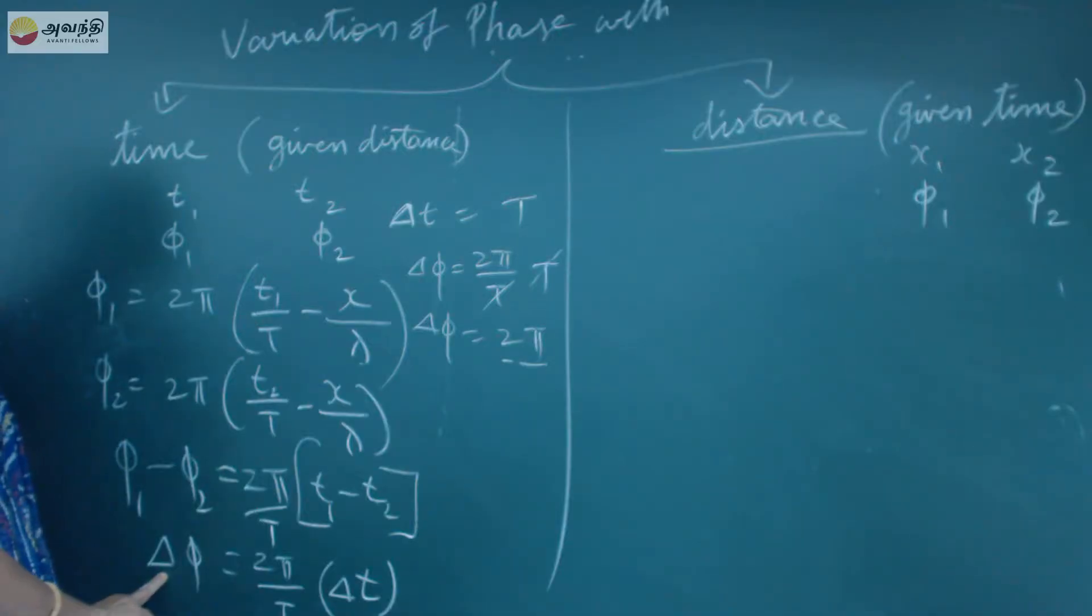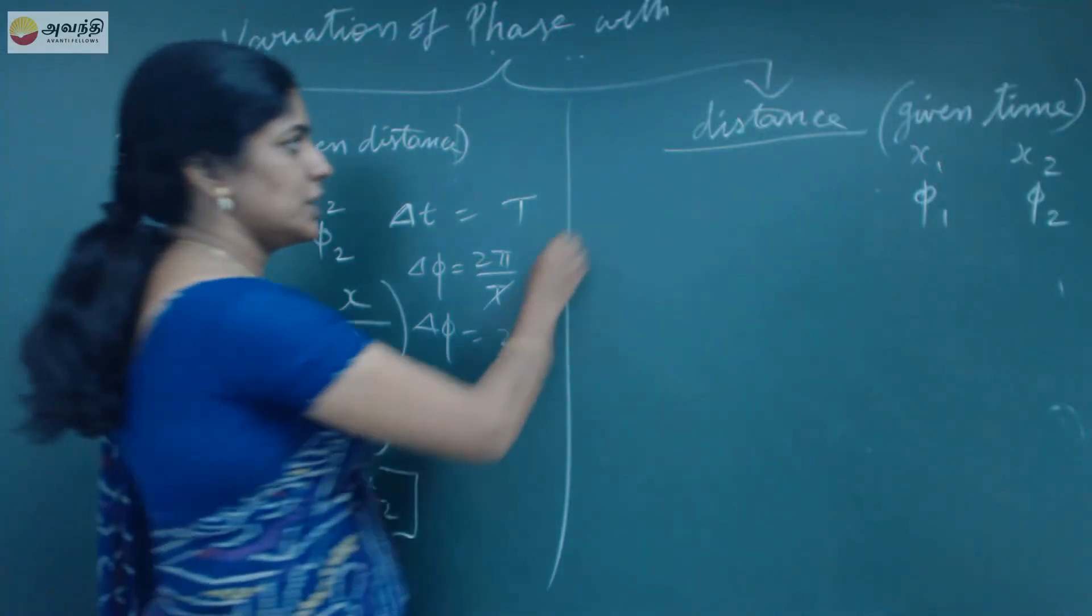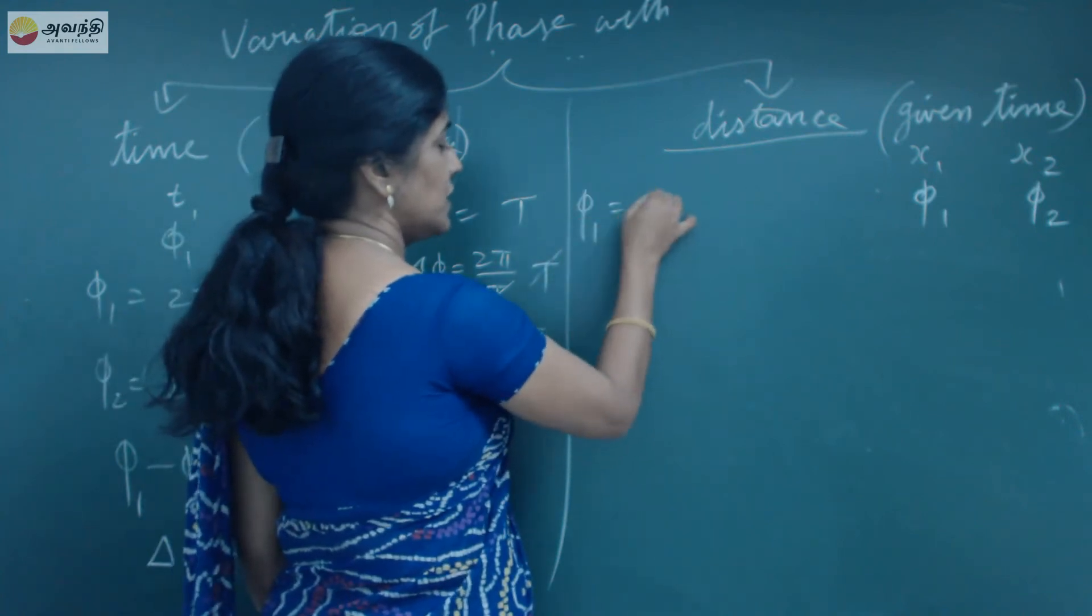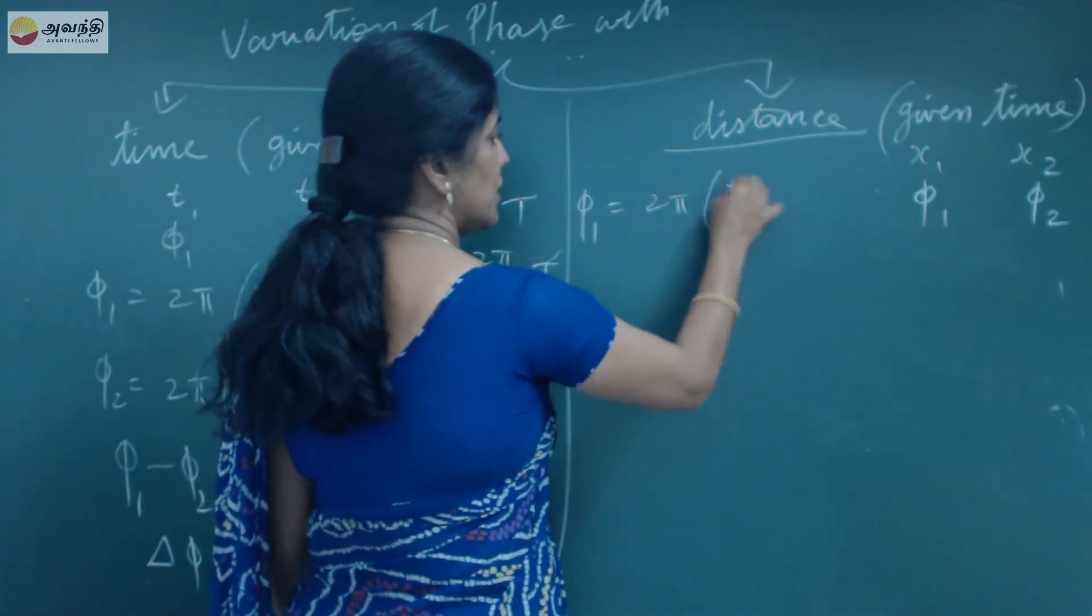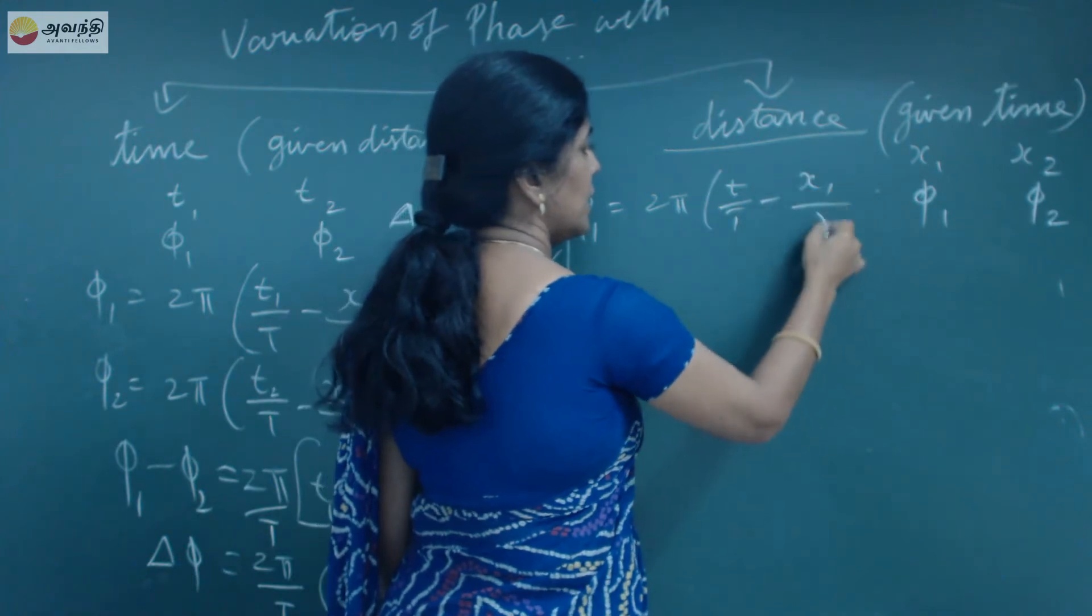Now, variation of distance in a paakla for a given time t. So, here the same formula φ₁ is equal to 2πt/T minus x₁/λ.